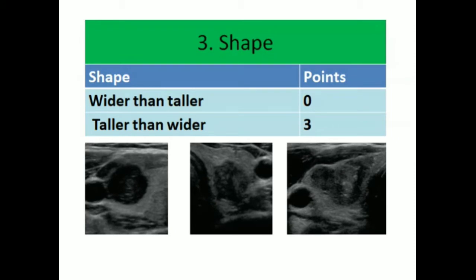The third feature is shape. We consider the anterior-posterior diameter. If the shape is wider than taller, the points awarded will be zero — there is a lesser chance of malignancy. But if the shape shows a taller than wider diameter, there is a higher probability of malignancy, and the points awarded is three.